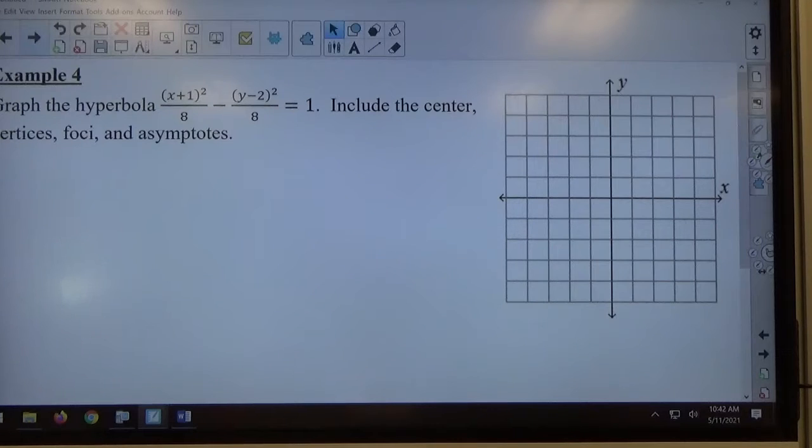Okay, for example, graph the hyperbola (x+1)²/8 - (y-2)²/8 = 1. Include the center, vertices, foci, and asymptotes.